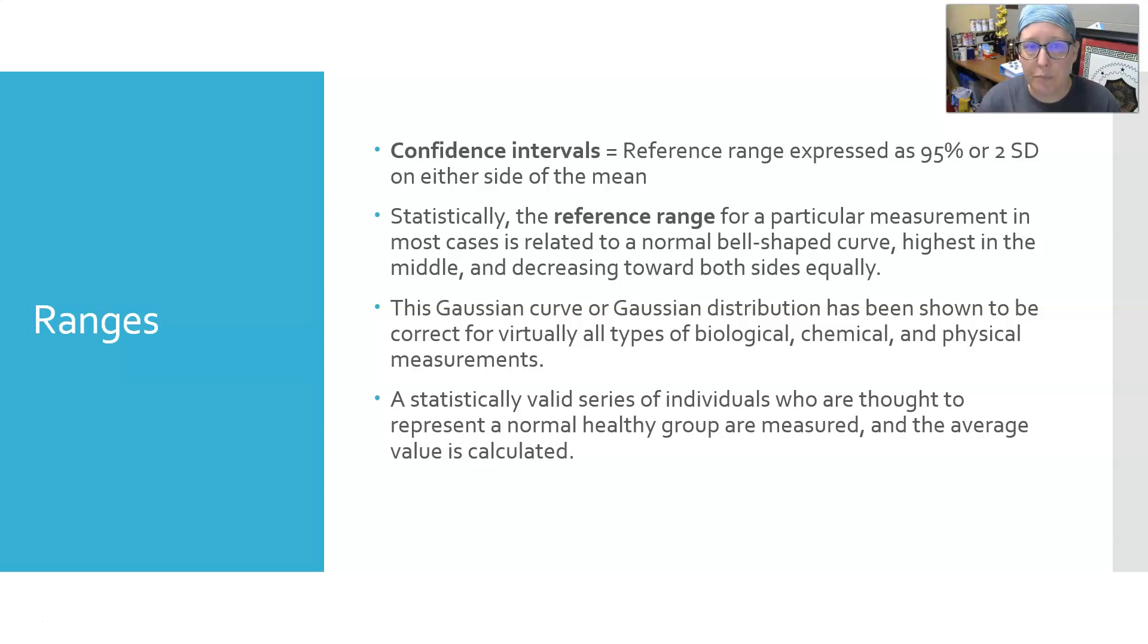Statistically, the reference range for a particular measurement is related to a normal bell-shaped curve, highest in the middle around the mean and decreasing toward both sides equally. The Gaussian curve has been shown to be correct for virtually all types of biological, chemical, and physical measurements. A statistically valid series of individuals who are thought to represent a normal healthy group are measured, and the average value is calculated.